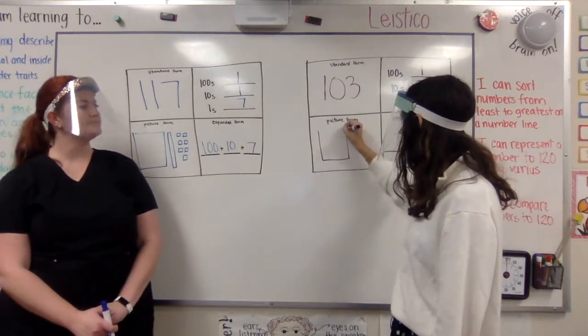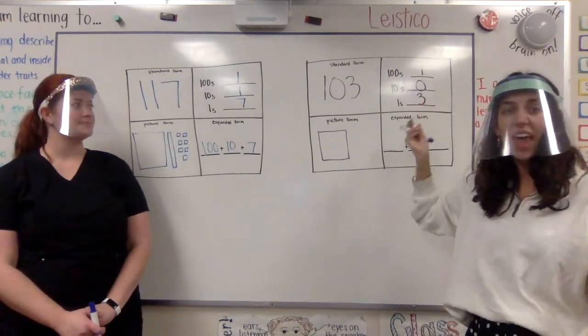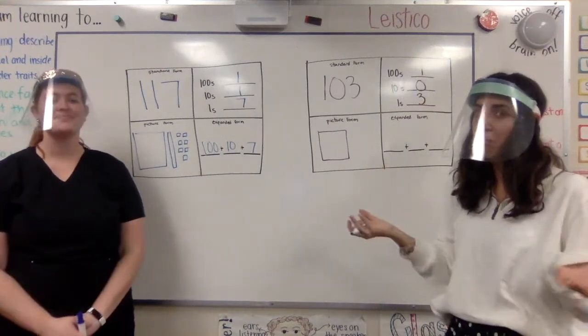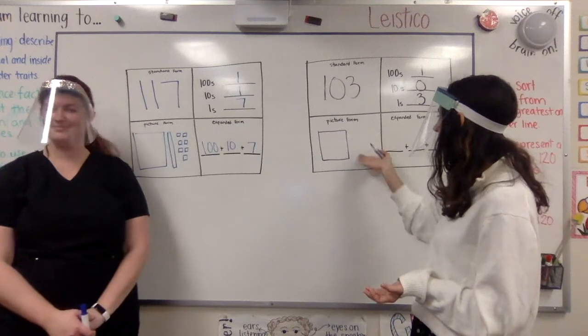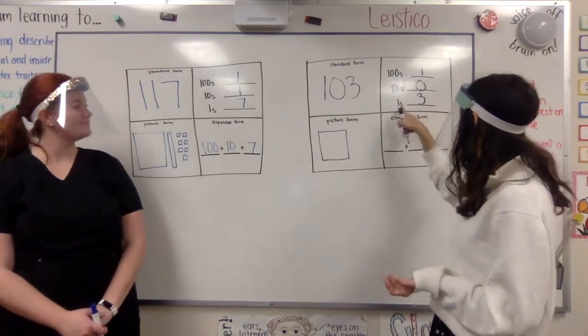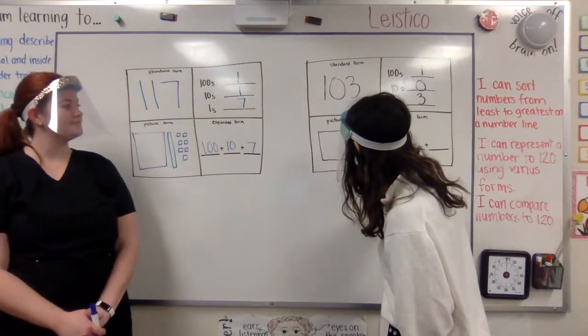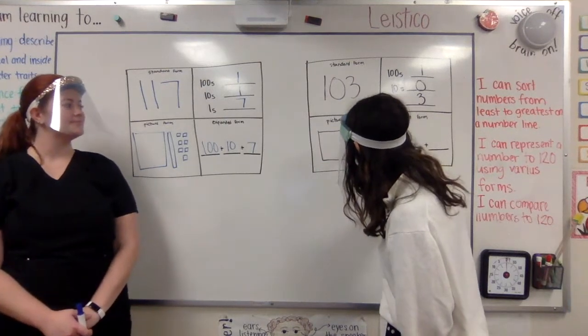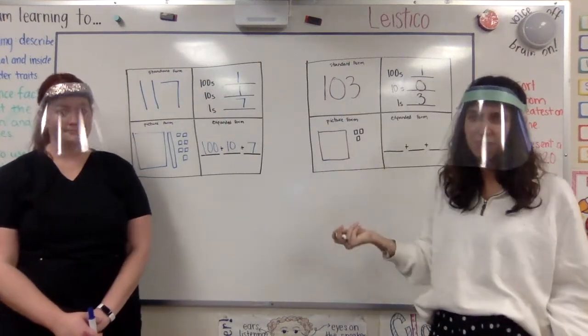So I only have to draw 1 hundred, I'm drawing my big square. Oh, I don't have to draw any tens because 0 means nothing. So I'm going to draw 0 tens. And then I'm going to draw 3 ones. And I'm making sure that my ones are a lot smaller than that 100 so that I don't get them confused.